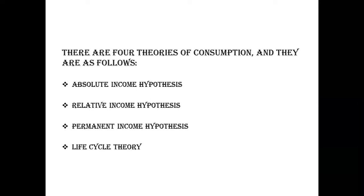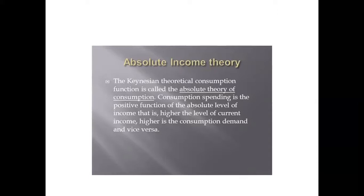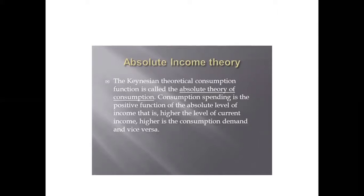Let's begin with the absolute income hypothesis. This theory is given by Keynes. The Keynesian consumption function is called the absolute theory of consumption. Consumption spending is a positive function of the absolute level of income — that is, higher the level of current income, higher is the consumption demand, and vice versa. In simple words, the absolute theory states that consumption and saving are directly related to income. Higher the income, higher will be the consumption, and when you earn more, you will also save more.